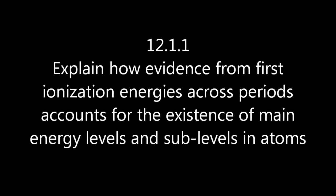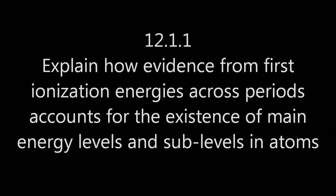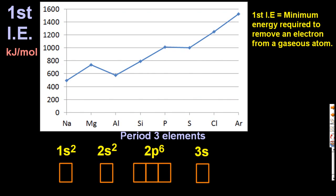So the IB only tends to ask really one question about this assessment statement, and we'll get to that in a tiny bit. So here is the graph showing the first ionization energy across period 3, the minimum energy required to remove an electron from a gaseous atom. That's the first ionization energy.